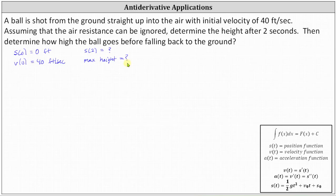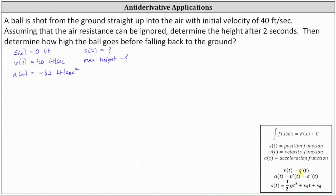There's one more thing we need to realize: the only acceleration in this problem is acceleration due to gravity. Because the units are feet and seconds, we know that a of t, the acceleration function, is equal to negative 32 feet per second squared. Since the acceleration function equals the derivative of the velocity function, we can integrate the acceleration function to recover the velocity function. The antiderivative of a of t dt equals v of t plus c, which gives us the integral of negative 32 dt.